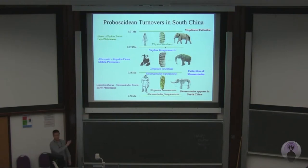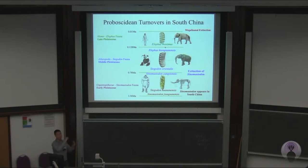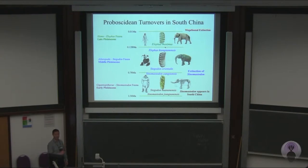In the lower Pleistocene we had what was called the Gigantopithecus-Sinomastodon fauna, and then we go into the middle Pleistocene with the Ailuropoda-Stegadon fauna. These two names are quite misleading because Gigantopithecus, from some materials yet to be published, lasted right into the late Pleistocene, and Ailuropoda was present throughout the Pleistocene — which takes us into the very end, the Homo-Elephas fauna.